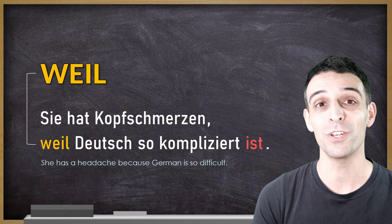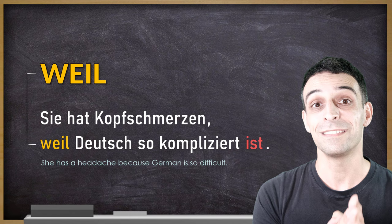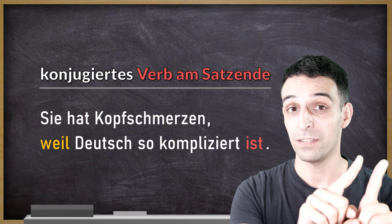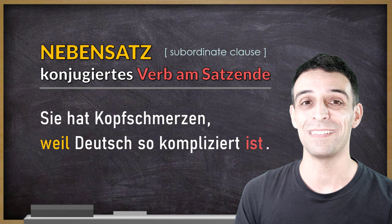The first part of the sentence, the consequence, stays the same. But the second part now starts with the conjunction 'weil' in position one. And the conjugated verb — this is super important — is at the end of your sentence, last position. This kind of sentence structure is called a subordinate clause, or 'Nebensatz' in German.